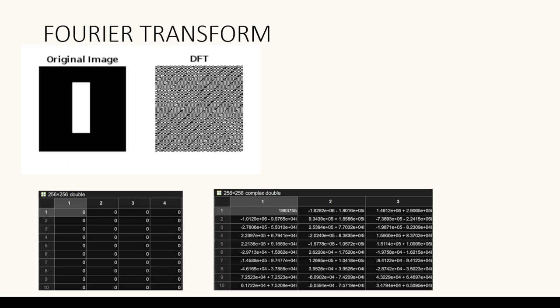The next step is the Fourier transform. The Fourier transform is applied to the image using techniques such as 2D Fast Fourier Transform or FFT, and this transforms the image from the spatial domain to the frequency domain. The resulting frequency domain representation is a complex valued function, which can be seen here in this slide. The original image and its Fourier transformation are given as an image representation, and the matrix is shown here as well.